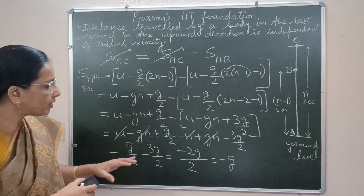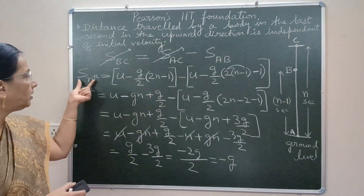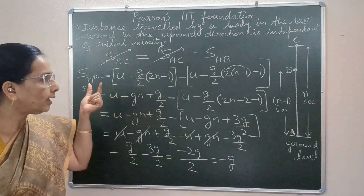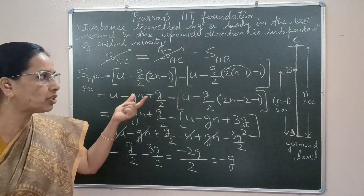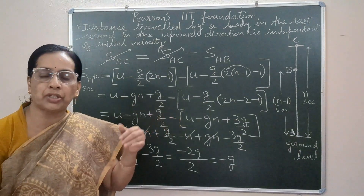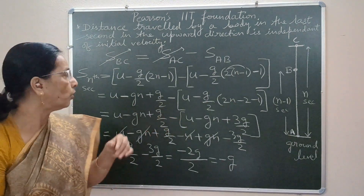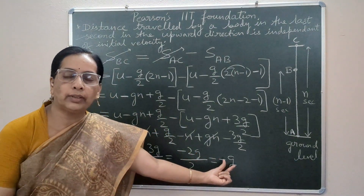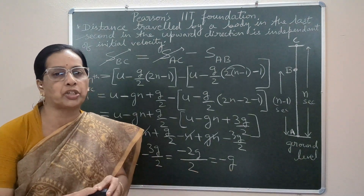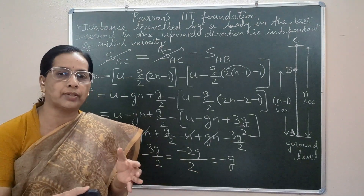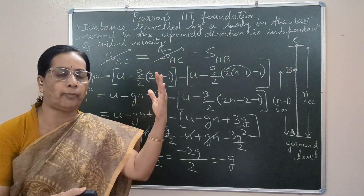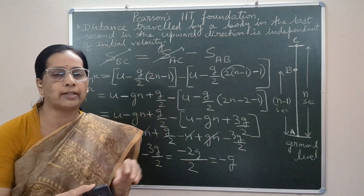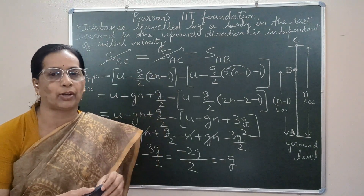So we were supposed to prove that the distance travelled by the body in the last second of the throw is independent of the initial velocity of throw. The result came out in terms of g only — this expression does not contain the initial velocity u. Therefore, the distance travelled by the body during upward motion in the last one second is independent of initial velocity.